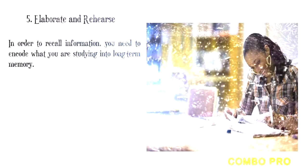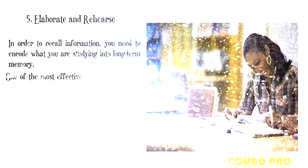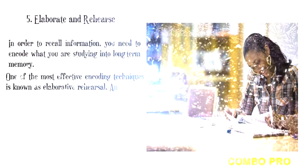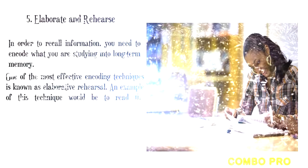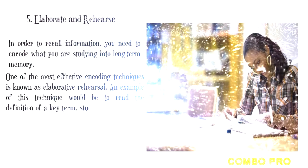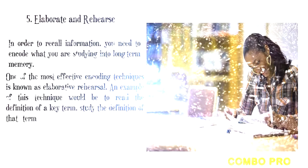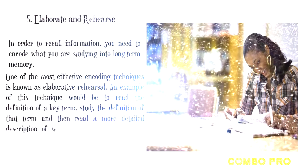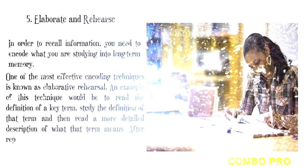The fifth tip is to elaborate and rehearse. One of the most effective encoding techniques is known as elaborative rehearsal. An example of this technique would be to read the definition of a key term, study that definition, and then read a more detailed description of what that term means. After repeating this process a few times, you'll probably notice that recalling the information is much easier.